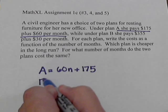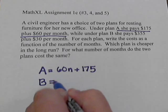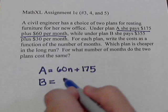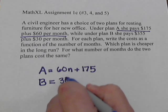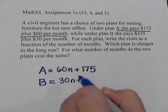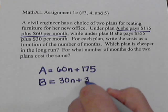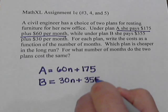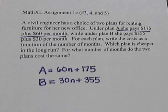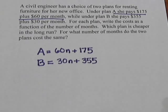For plan B, follow a similar plan. $30 per month, so our rate of change is 30, and plus this time we have 355. So B = 30n + 355. Now if we want to find out when these two are going to be the same...